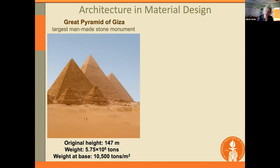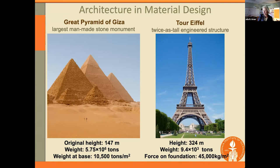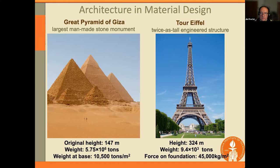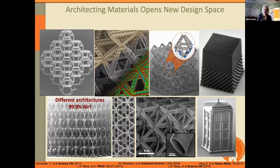One way to think about it is through the concept of architecture as a key enabler in materials design. Maybe some of you have been here — this is the Great Pyramid of Giza, the largest man-made stone monument. It stands about 150 meters tall and weighs 6 million tons — by no means a lightweight structure. In contrast, the Eiffel Tower stands twice as tall but weighs 1,000 times less — three orders of magnitude less — and it's just as mechanically robust, and perhaps required a lot fewer slaves to build it. So what that teaches us is that by being clever about the architecture you use in your material, you can use a lot less of it without any sacrifice in mechanical strength.